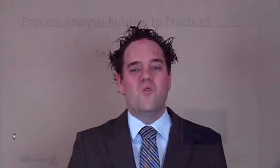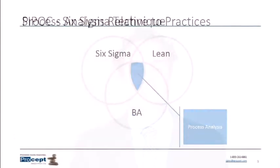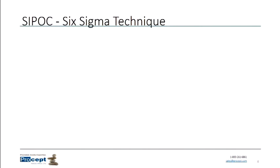So let's look at the techniques we're going to borrow from these other methodologies. We're going to start with SIPOC — a Six Sigma methodology technique. SIPOC is actually an acronym. It stands for Supplier, Input, Process, Output, and Customer.